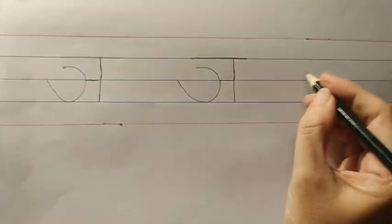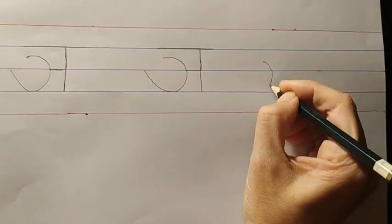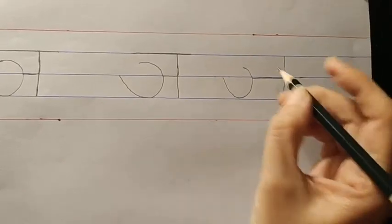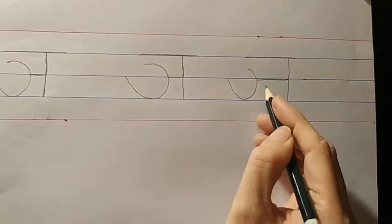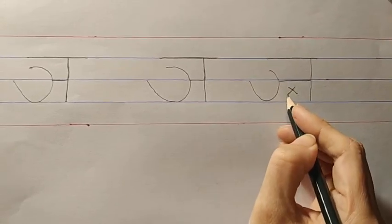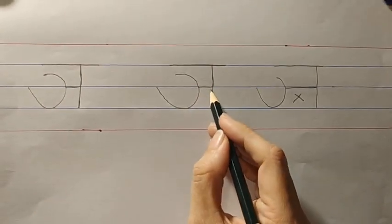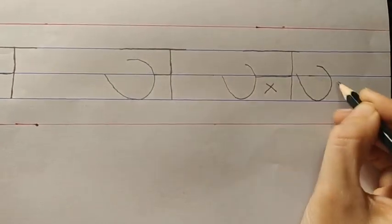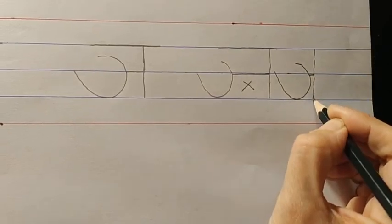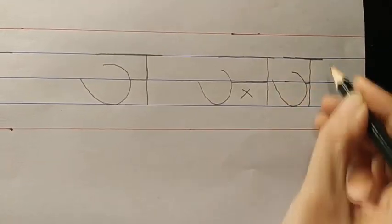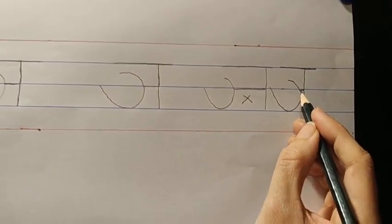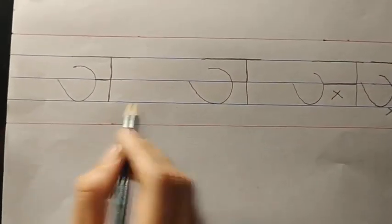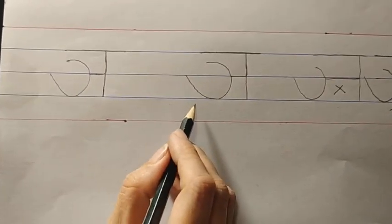Now, tell me — is this the right way of writing? Do you think the sleeping line will be this big? Not at all. Sleeping line will be this much. But do you think this is also the right way of writing? No. The sleeping line should not be this small either. So, these two are the right formations of the letter Vyanjan Nya.